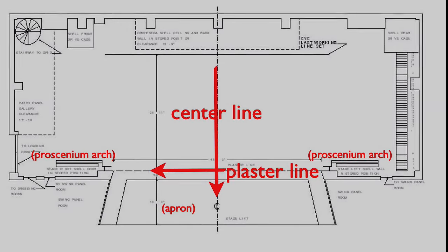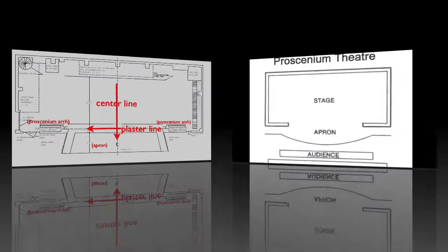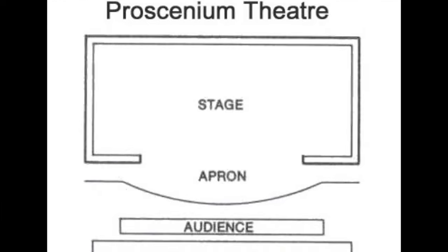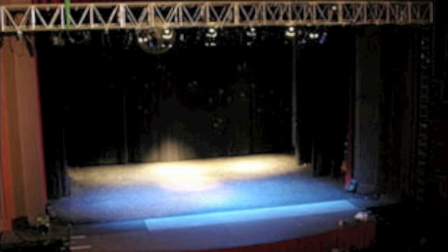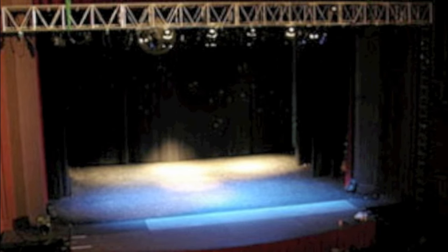Downstage from the plaster line on a proscenium stage is an area known as the apron. Although the apron was traditionally not used as acting space since it was outside of the play's picture frame, nowadays it is more and more used as we try to give our audiences a more personal experience.